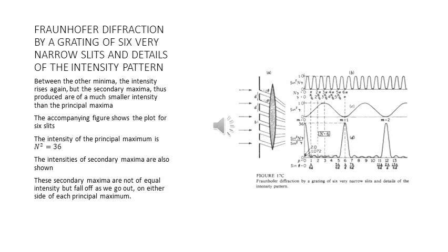The secondary maxima fall off as we go out on either side of each principal maximum. The first figure shows the plot of sin²(nγ), the second shows sin²(γ), and the third is sin²(nγ)/sin²(γ). In between the principal maxima, which occur at λ/6, 2λ/6, and so on, you will find four secondary maxima. This will become more clear in the next slide where we discuss this pattern in greater detail.